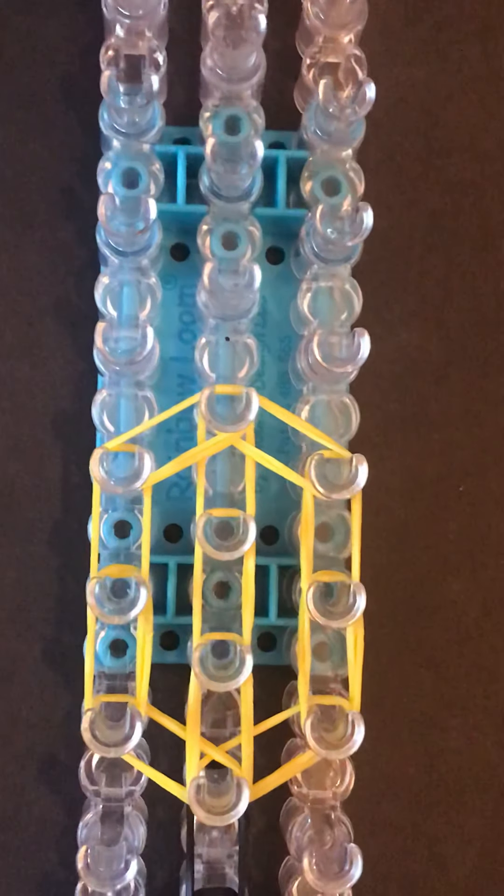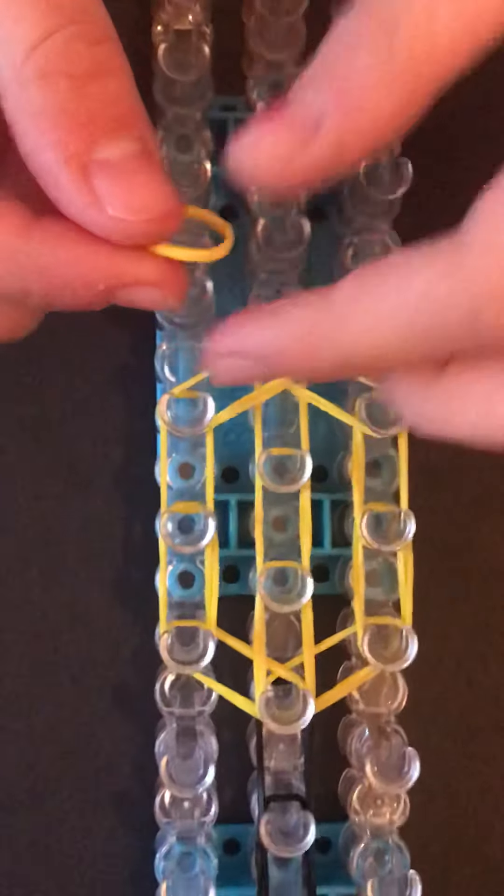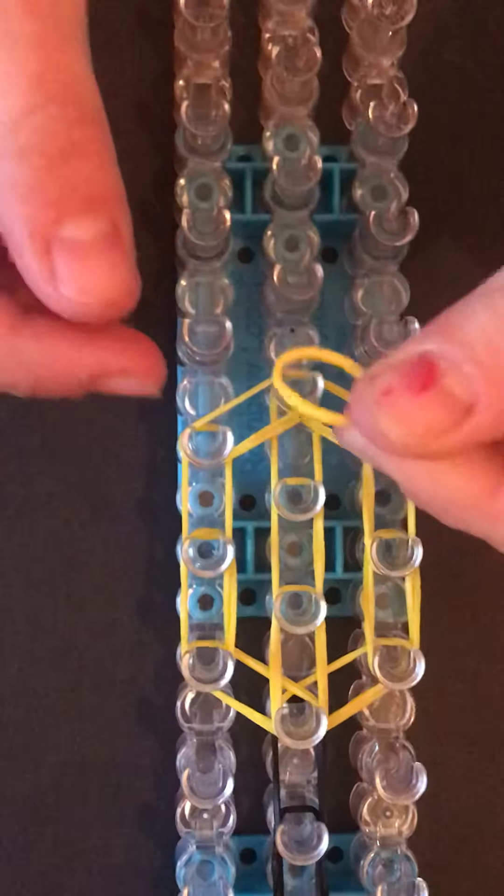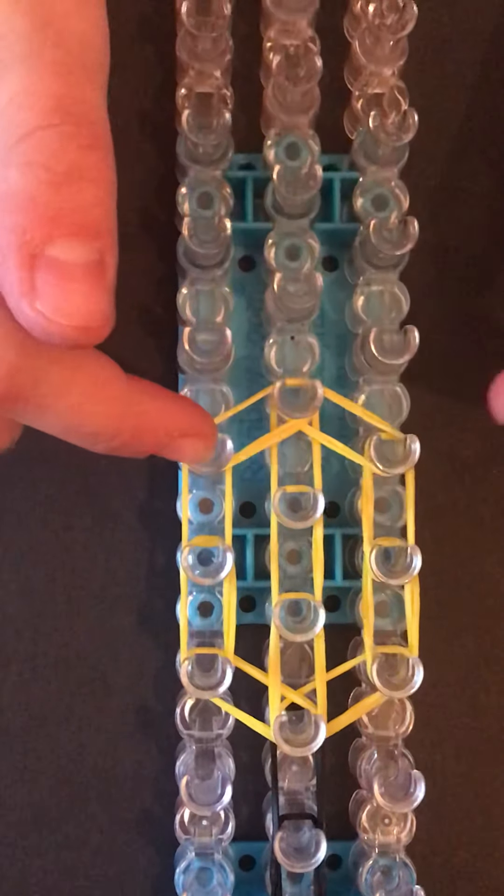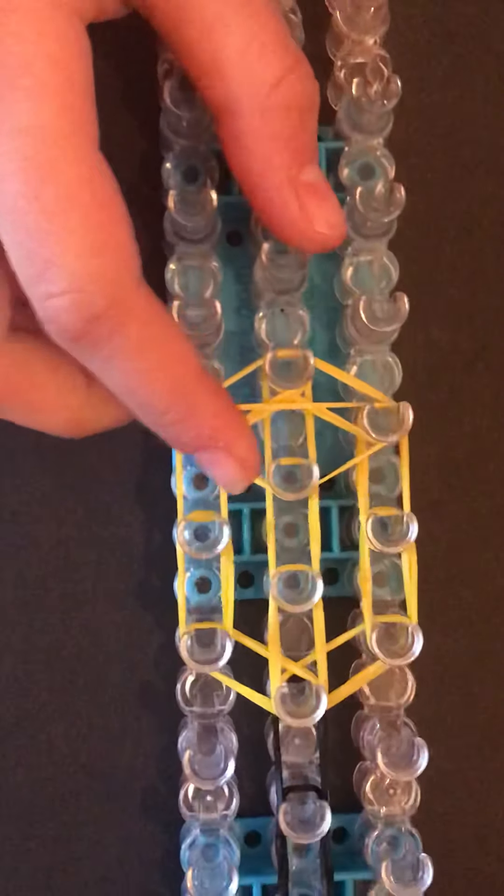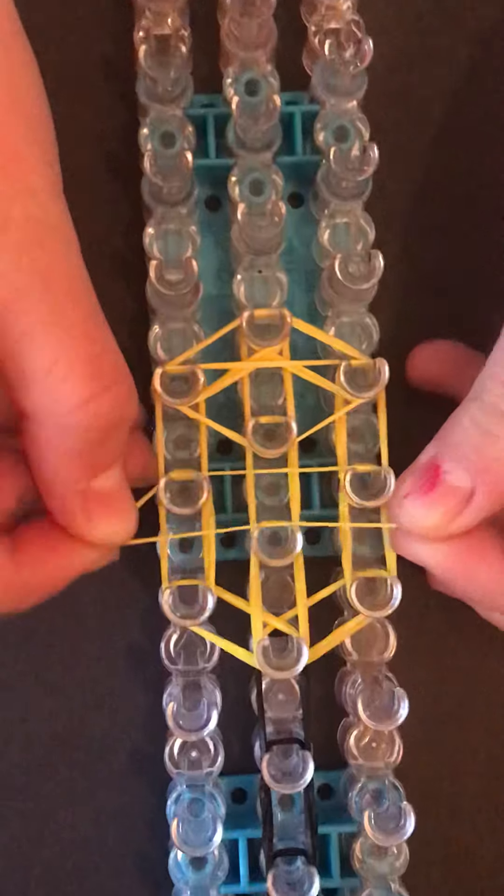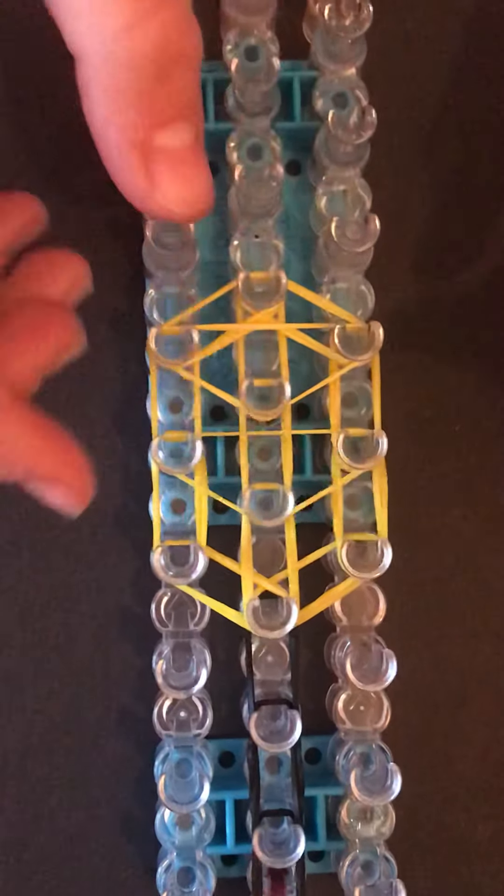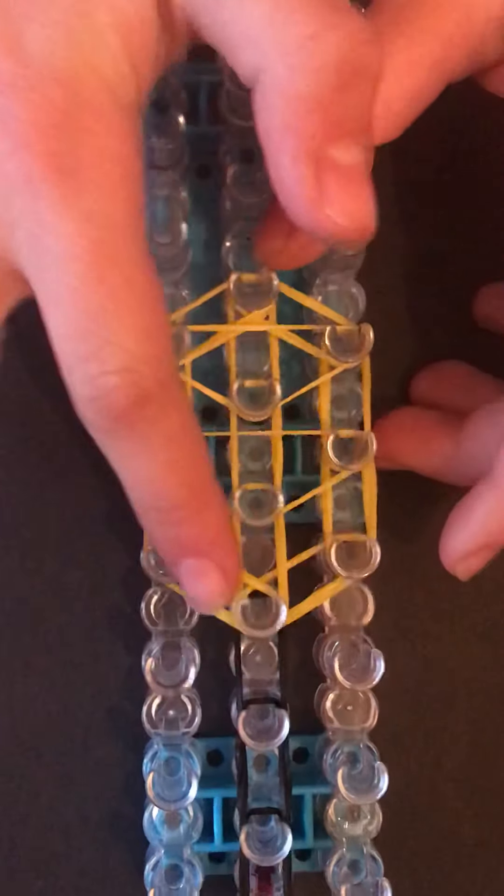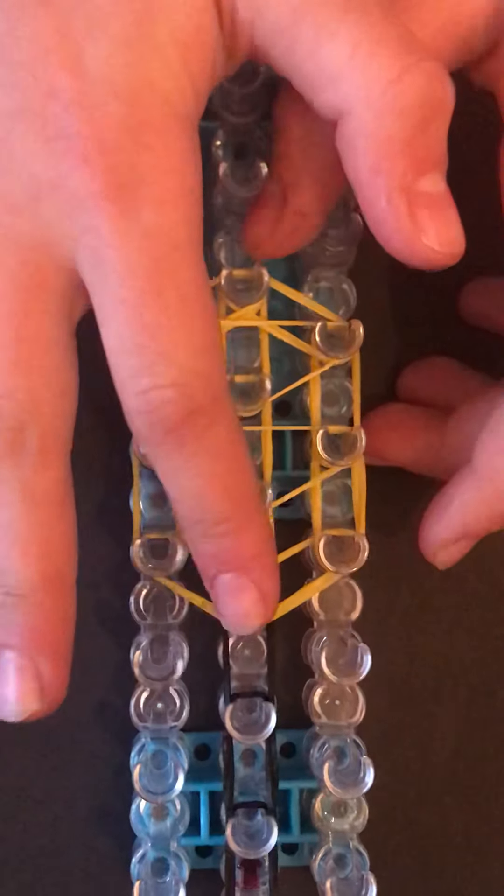Now before we put our cap band on and start hooking, take one band and you're going to make a triangle on these three pins like this. Then take another band and do it on the three above like that. You're not going to do it on these three just because there's already so many bands right here.